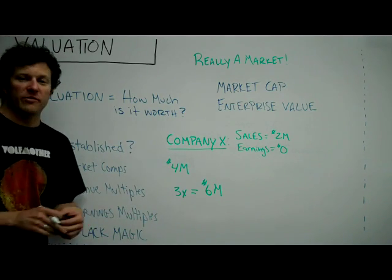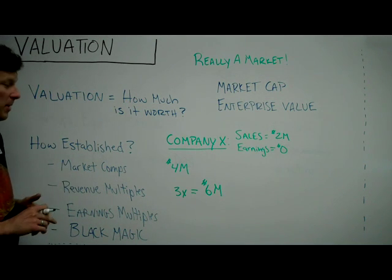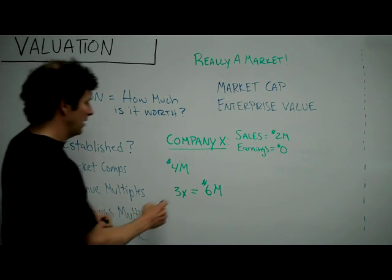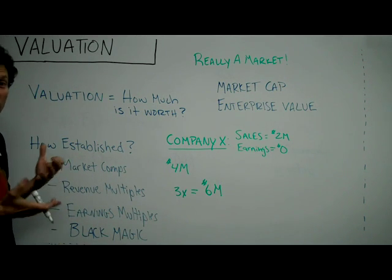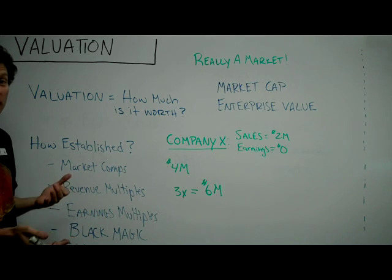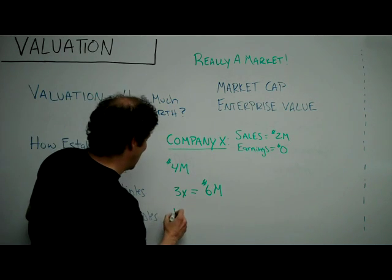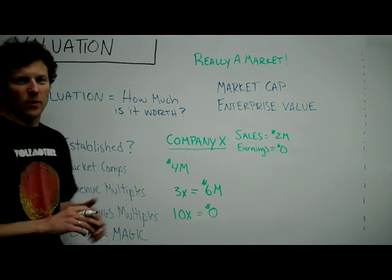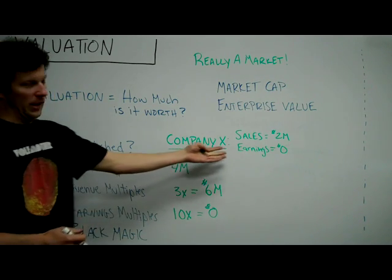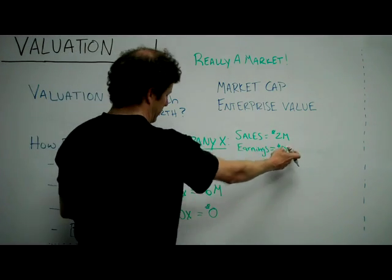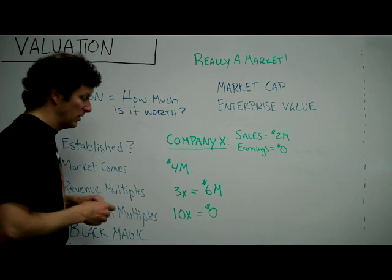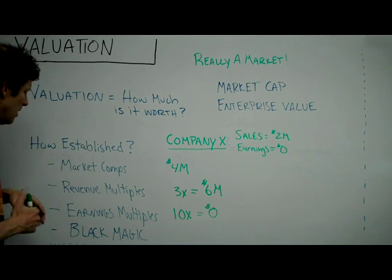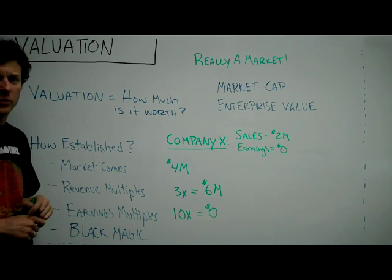That's really not an uncommon way in the venture community to value a company. A lot of times they do that because the company doesn't have earnings. If a company is making a profit, you might use an earnings multiple, which is the same concept — except earnings multiples tend to be higher than revenue multiples because profit is more valuable than revenue. In this case, let's say it's a 10x earnings situation. Even though Company X has zero earnings, that would put the valuation at zero — but of course the company is not worth nothing, so an earnings multiple wouldn't really work here. If your company had a million dollars in earnings, you could see that would be a $10 million valuation. You'd probably have to use a revenue multiple because Company X is so young, which is the case with most venture-funded companies. Earnings multiples are often used in a company's middle stages when it's making a profit.